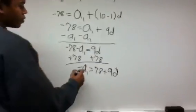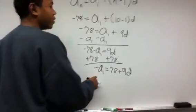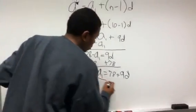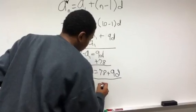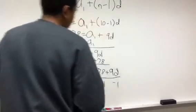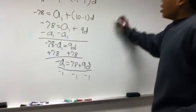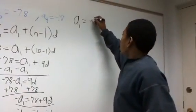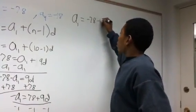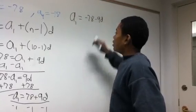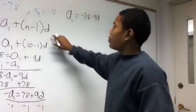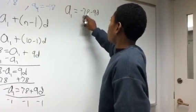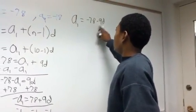We want to find what positive a sub 1 is. Adding 78 to each side gives us negative a sub 1 equals 78 plus 9d. Dividing by negative 1, we get a sub 1 equals negative 78 minus 9d.